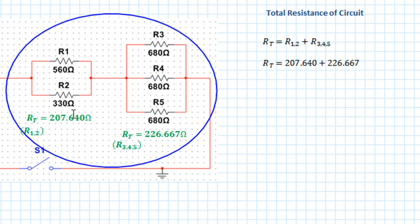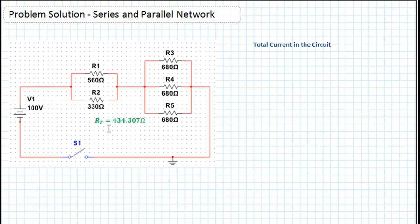Substituting the values we already have — 207.640 and 226.667 — and simply adding them together, we get the effective total resistance of the circuit as 434.307 ohms. Now we have the total resistance and we know the voltage, so we can work out the total current in the circuit.